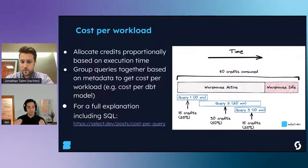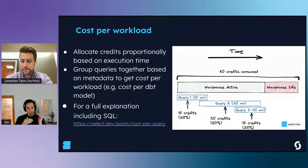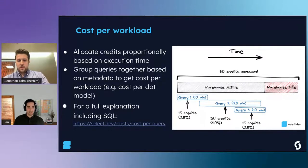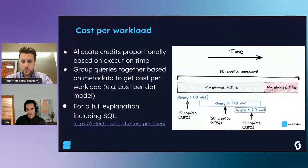The important thing is that Snowflake bills you each second the warehouse is up, not each second a query ran. With this methodology you can account for concurrency within a warehouse - the more queries running, the lower the average cost per query - and it also accounts for the idle time caused by every query. Once you have this cost per query, you can group queries based on metadata to calculate cost per workload. A common example is using dbt metadata that dbt adds to every query to aggregate to each model and calculate cost per dbt model. We've written about this extensively in a blog post - the SQL code to run on your account is available at the link provided.